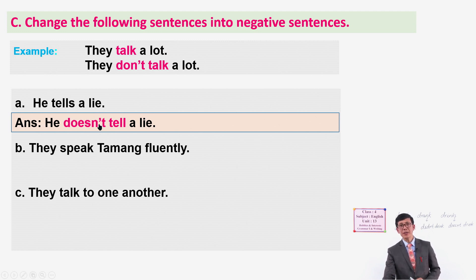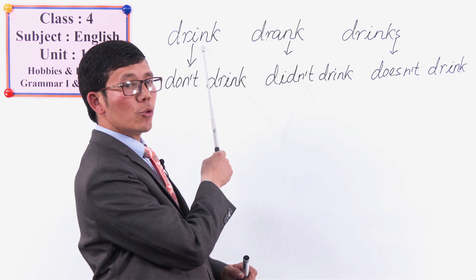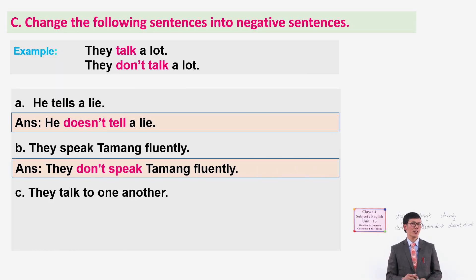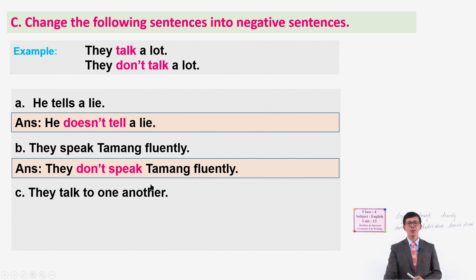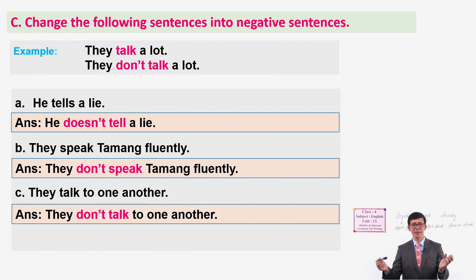'They speak Tamang fluently' - this is like 'drink,' so it becomes 'They don't speak Tamang fluently.' And number C: 'They talk to one another' - in the same way, the negative is 'They don't talk to one another.'